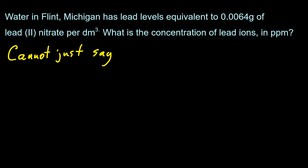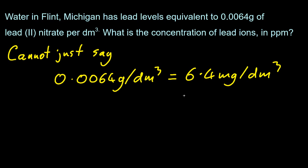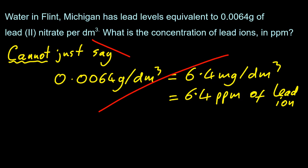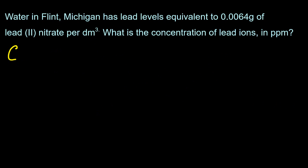You can't just say, I'm going to convert the grams per decimetre cubed to milligrams per decimetre cubed by moving the decimal place along. No, no, no. It's not 6.4 parts per million. You can't just say that. Why is that? Well, it's 0.0064 grams of lead nitrate. Some of that mass is the nitrate. We're not interested in that. I just want to know about the lead.